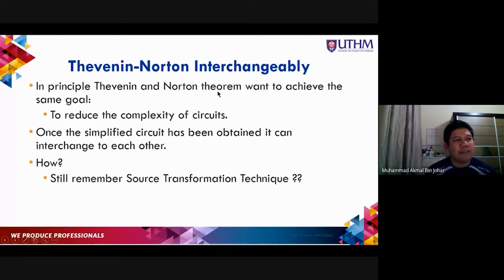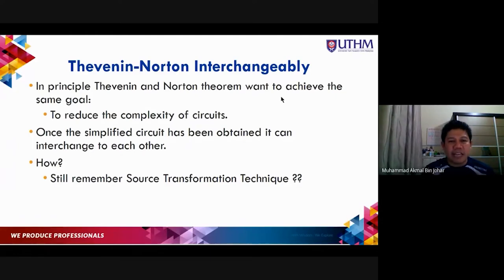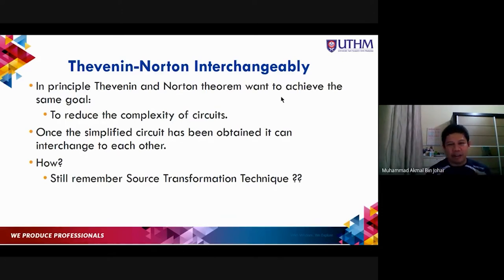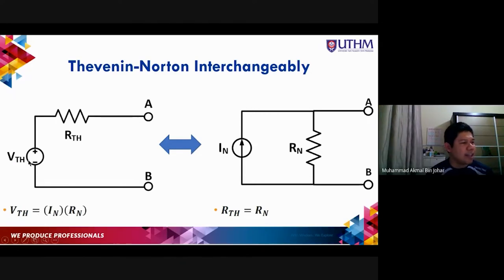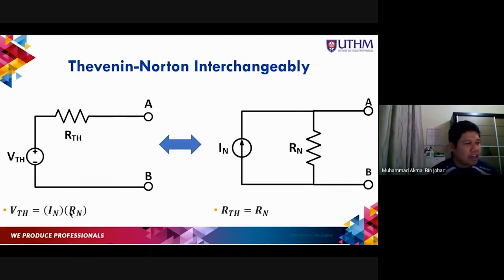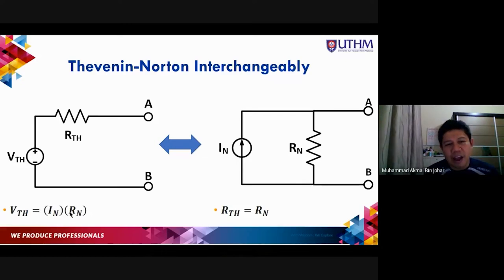Thevenin and Norton theorems achieve the same goal: to reduce the complexity of circuits. Once a simplified circuit is obtained, they can interchange with each other using source transformation. The Thevenin voltage V_Th and R_Th are interchangeable with I_Norton and R_Norton. To calculate I_Norton from V_Th, use I = V/R, and to get V_Th from I_Norton, use V = I × R.